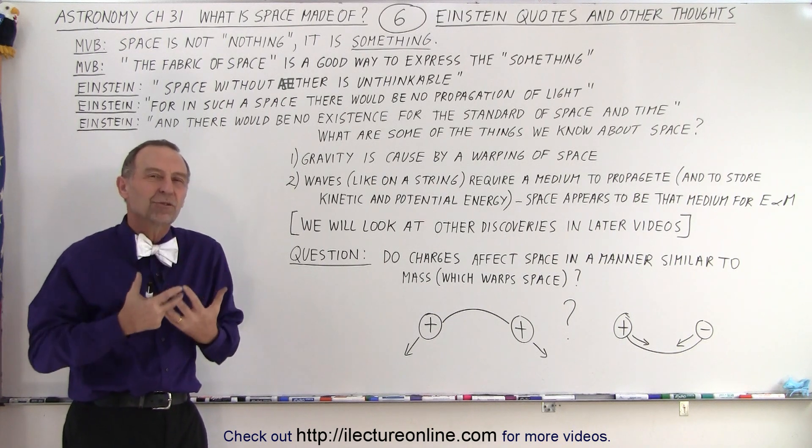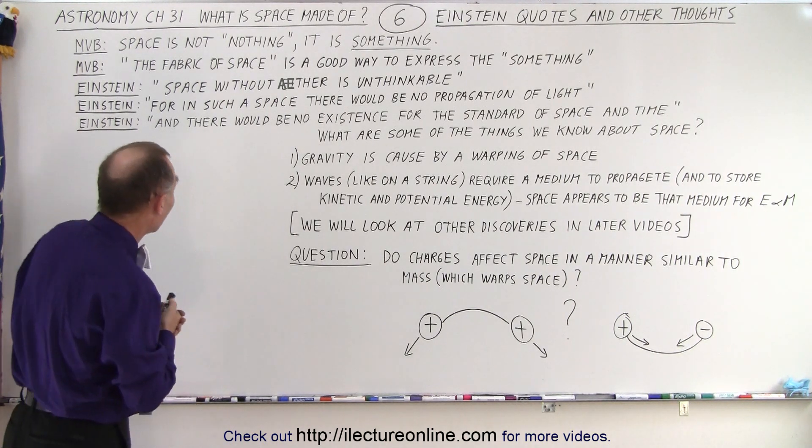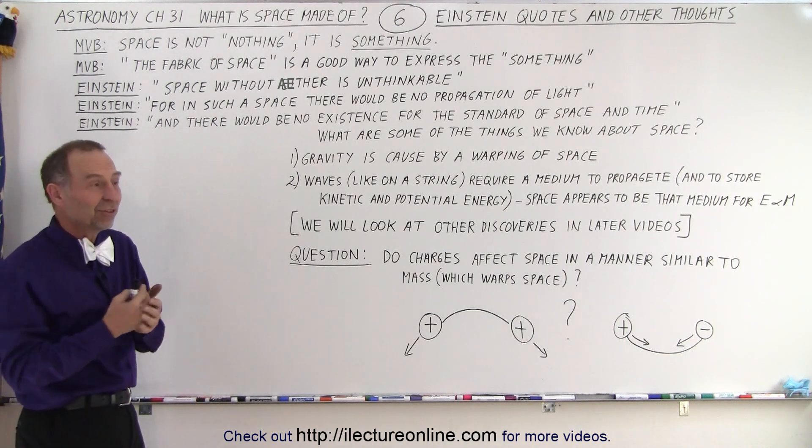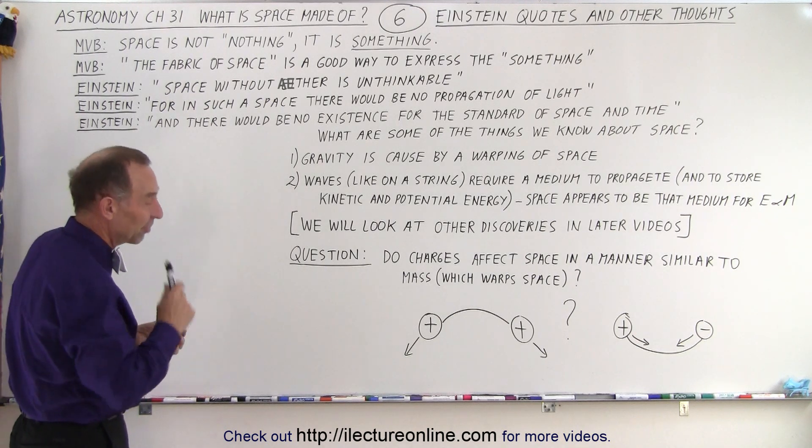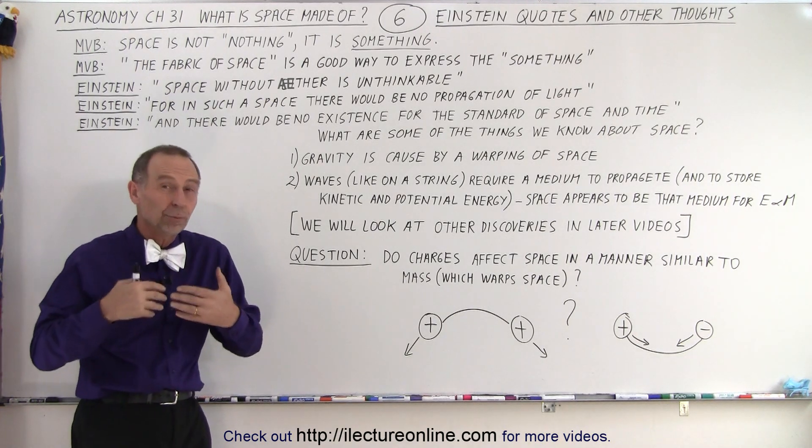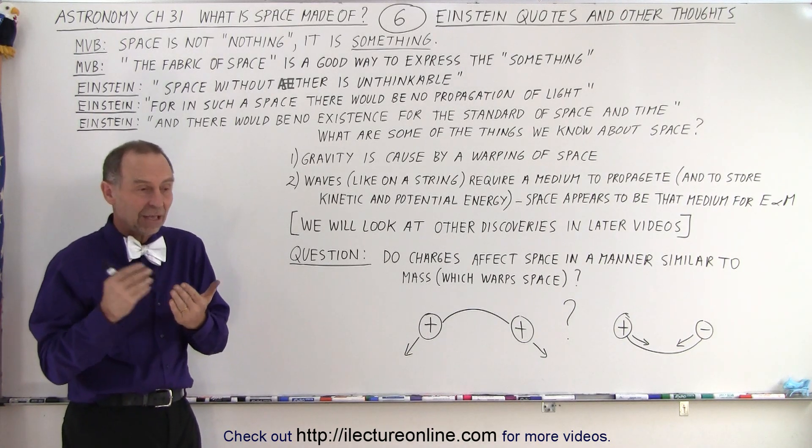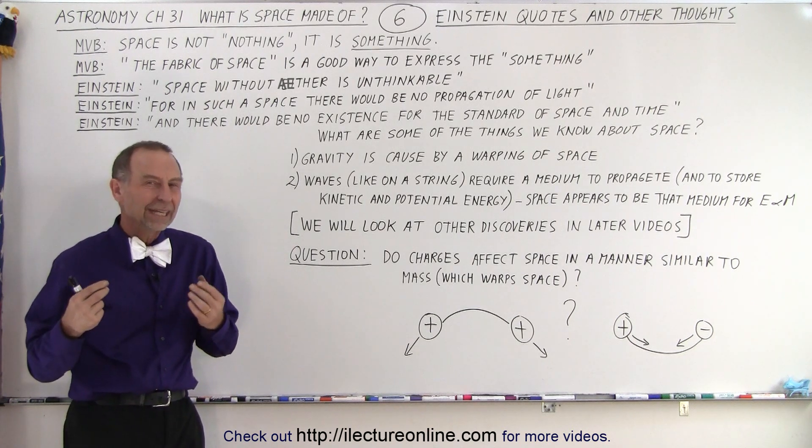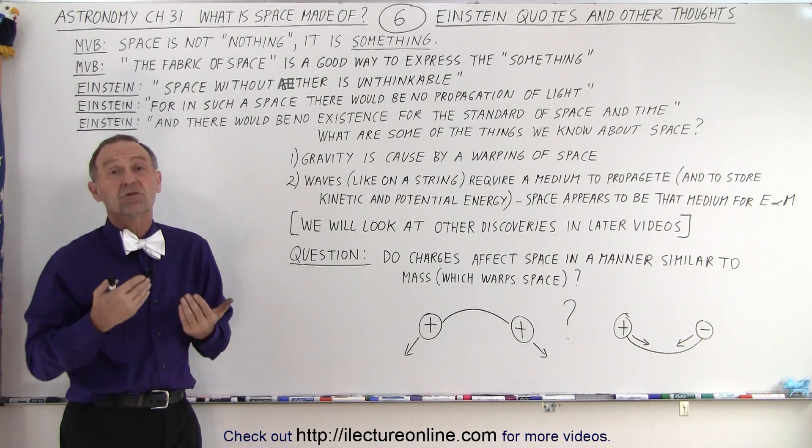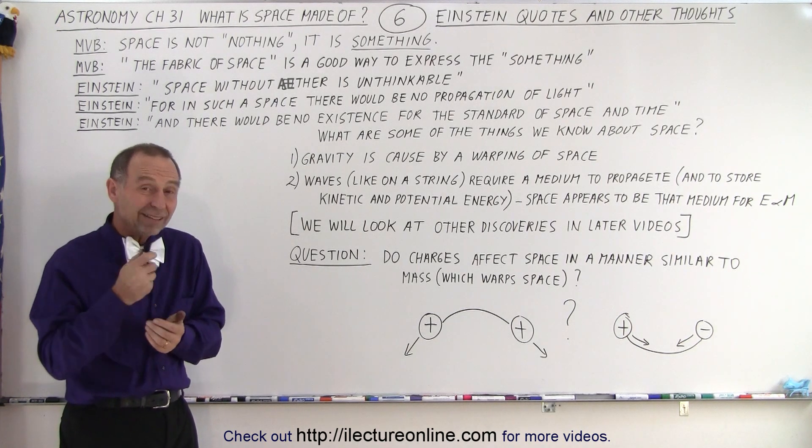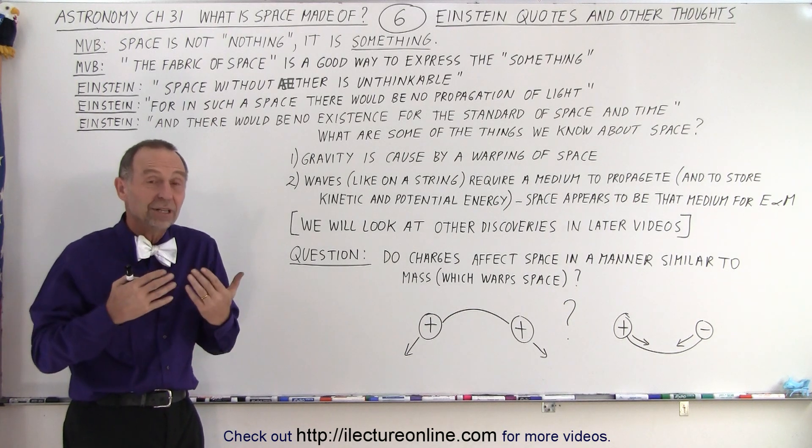Einstein had some very elaborate and more down-to-the-point words. He said that space without ether is unthinkable. They were not able to prove that ether was there, because at least it did not affect the speed of light. As Earth was traveling in one direction versus another direction, it did not seem to have an effect on how fast light was approaching Earth. We could not measure any difference. But Einstein said that's not a reason for not thinking it's there.